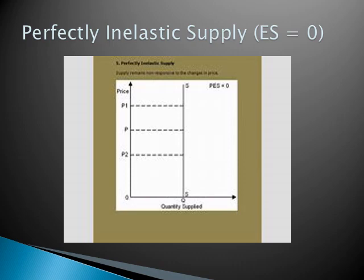Our next degree is perfectly inelastic supply, where elasticity of supply is actually 0. This is a situation when there is a change in the price but there is no change in the quantity supplied. The original price is OP, price increases to OP1 or decreases to OP2, but the quantity supplied remains the same at OQ.